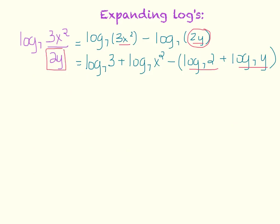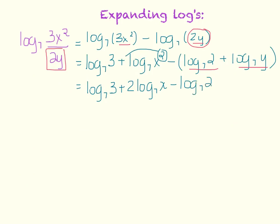Now I'll deal with the exponents. There's no exponent on log base 7 of 3. But this exponent 2 comes out in front: 2 times log base 7 of x. Then I distribute that negative. No exponents on the remaining terms. And I have now expanded.